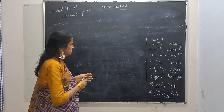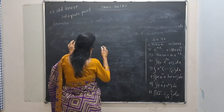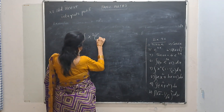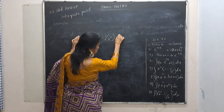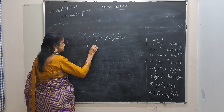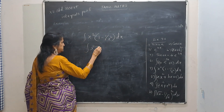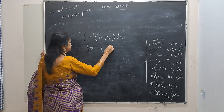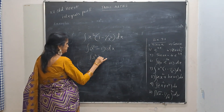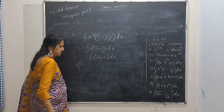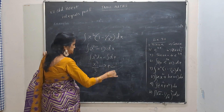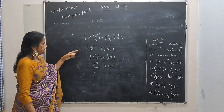Integrate x squared into (1 minus 1 by x squared) dx. Take x squared inside: x squared times 1 is x squared, and x squared times minus 1 by x squared, x squared and x squared cancel giving minus 1. So integral of x squared minus 1 dx, which gives x cubed by 3 minus x plus c.